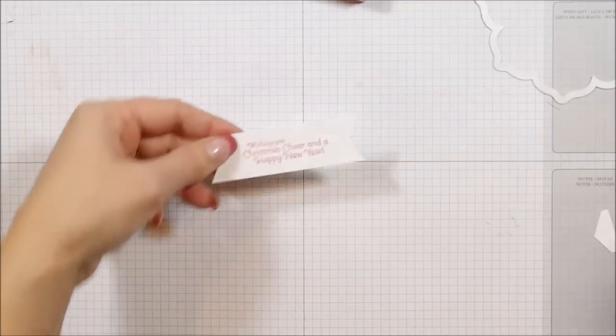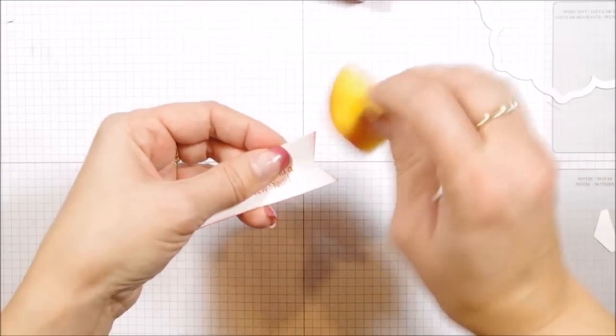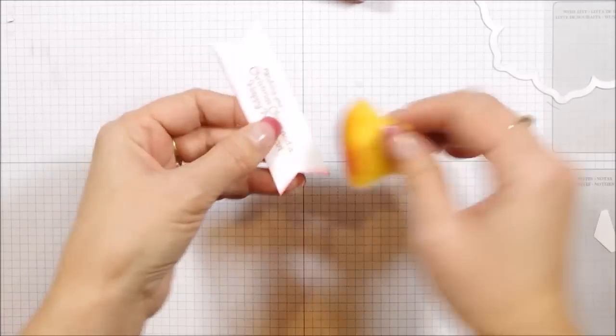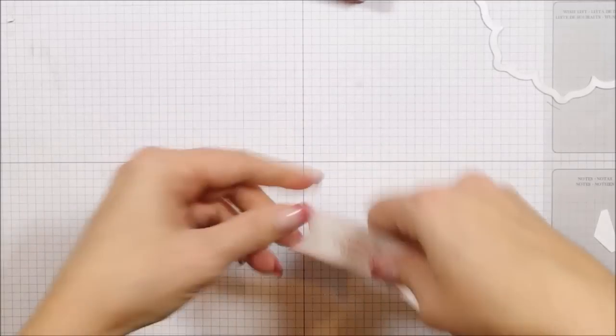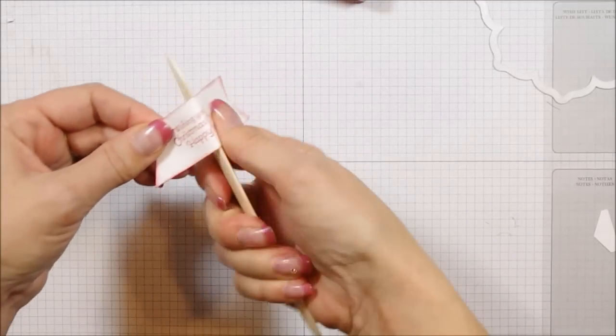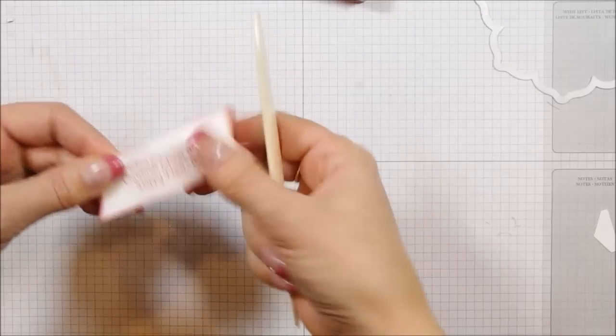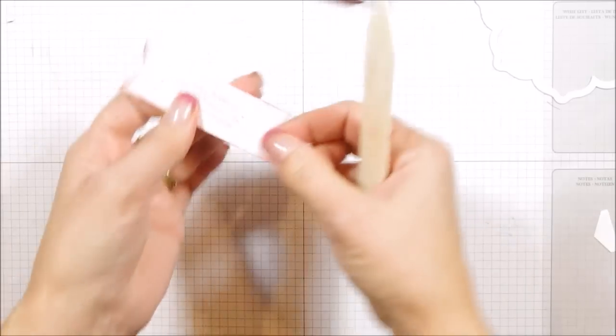All right, so there's our little banner. And again, we're going to take our sponge and just add a bit of red all the way around. I'm just creating a lot of texture on this one. And then you're going to take your bone folder, and you want to kind of bend it in the middle this way, and then we're going to take each edge and bend it up.